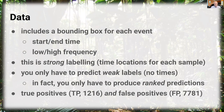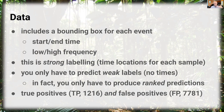This is called 'strong labeling' — you get time locations per sample, and since you also get the frequency dimension, it could be called 'extra strong labeling.' Some people call it hard labeling. You only have to predict weak labels — just which species are present in the whole one-minute audio file, given as probabilities. The evaluation ranks those predictions from most likely to least likely.